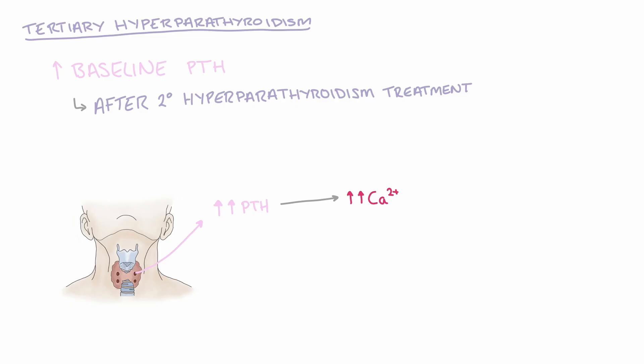However, in some patients the parathyroid does not reduce in size and therefore releases more parathyroid hormone at baseline, leading to hypercalcemia. Tertiary hyperparathyroidism can be treated surgically by removing the offending parathyroid gland.